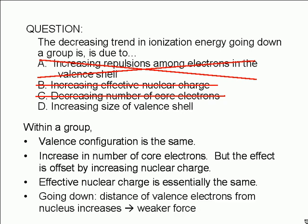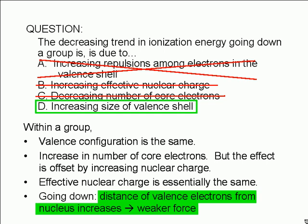The correct answer is D. As you go down a group, the valence shell gets larger. That means the electrons are further away from the nucleus. Since the force that pulls them in is electrostatic, the strength of the force decreases.